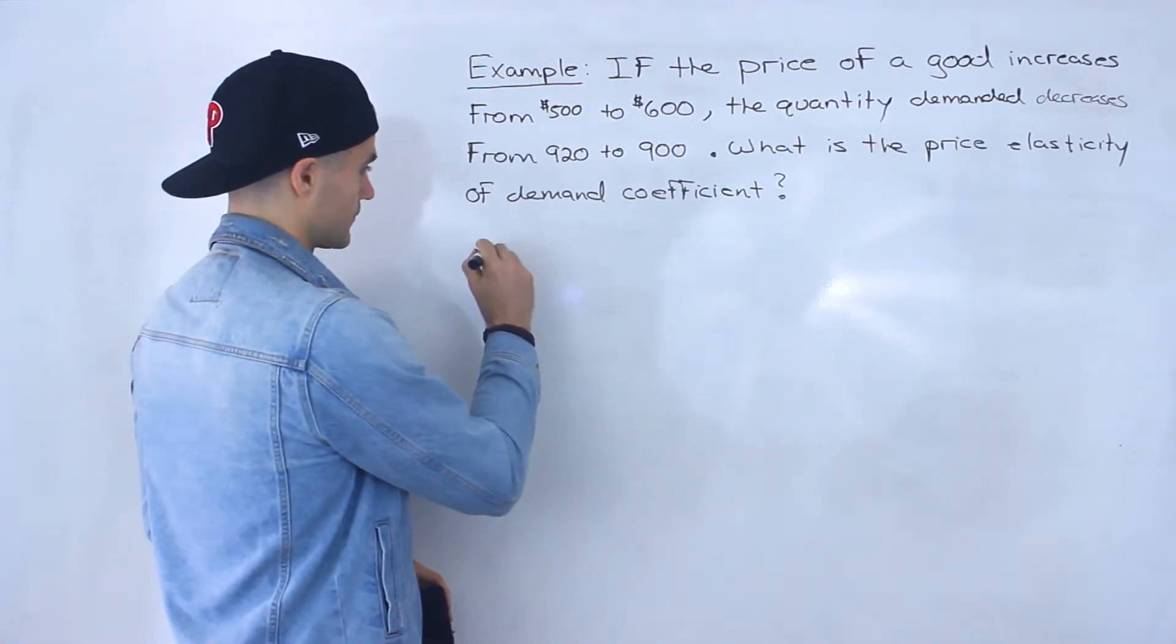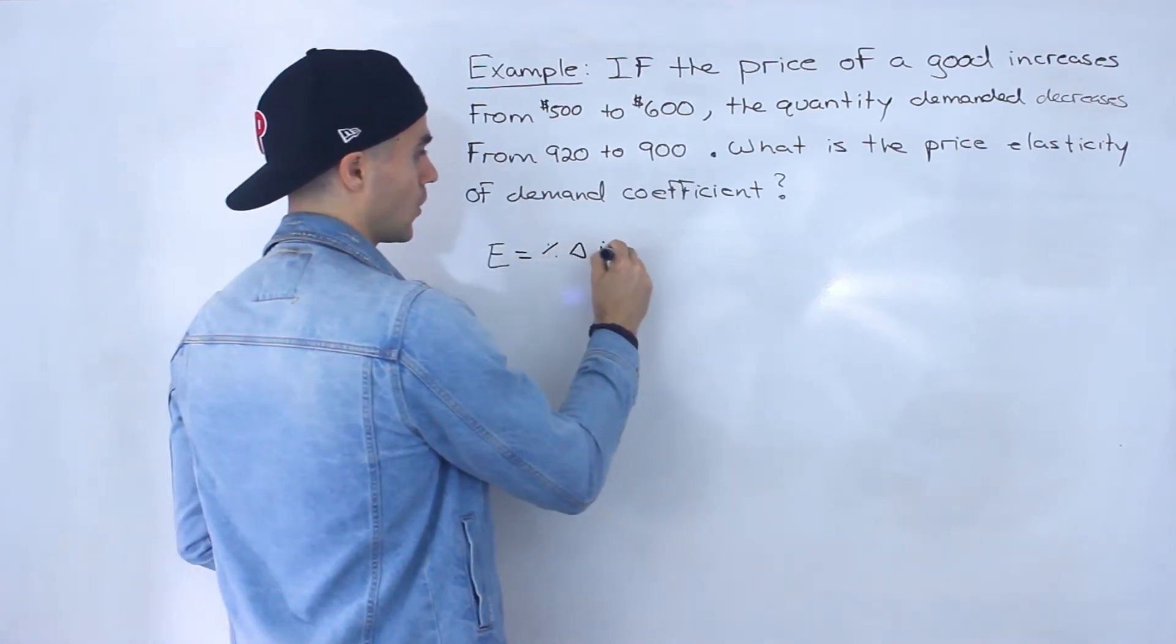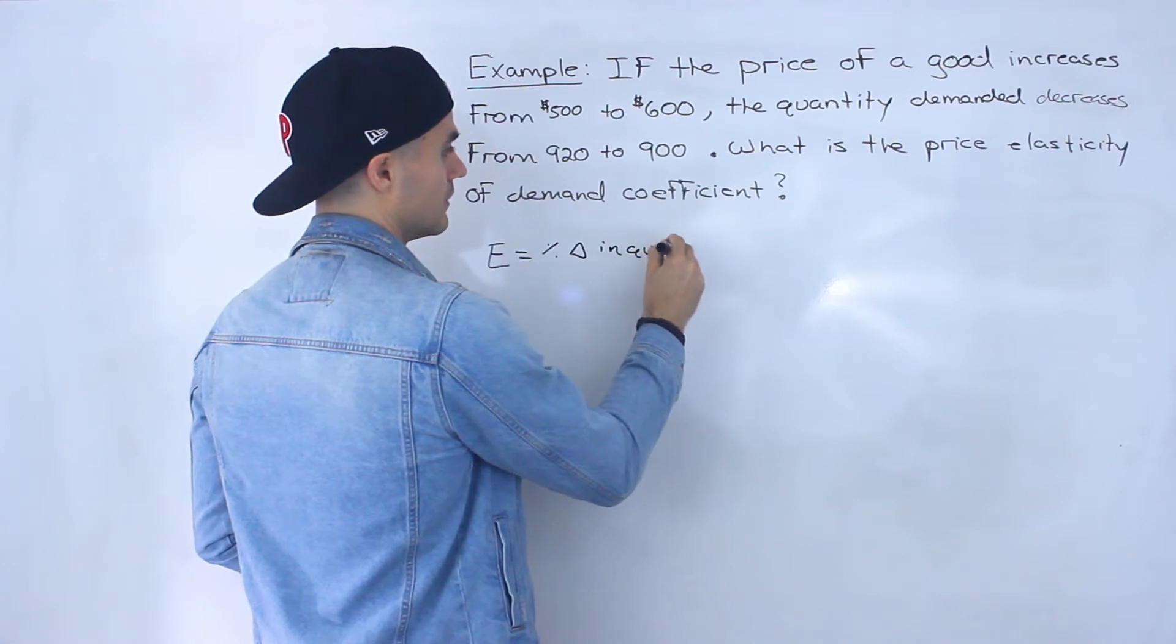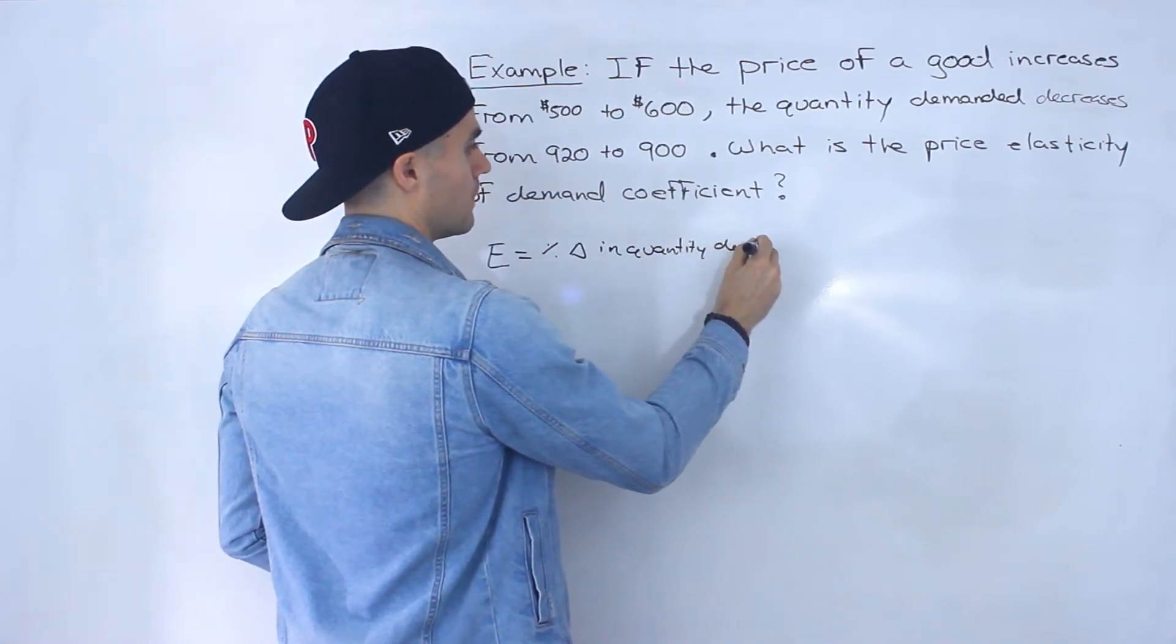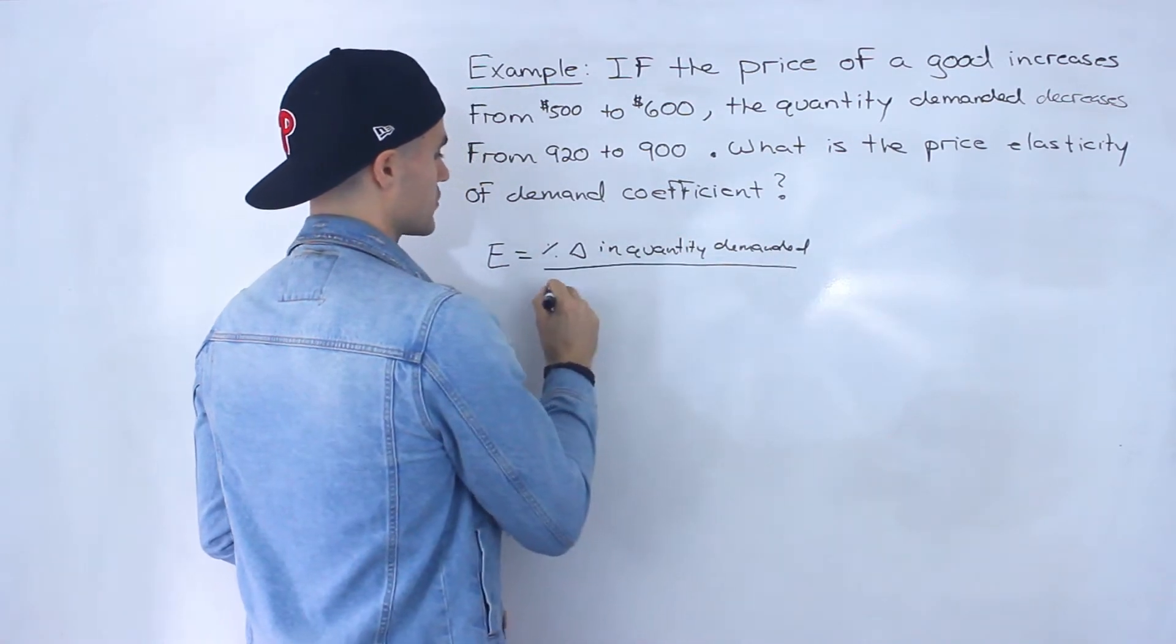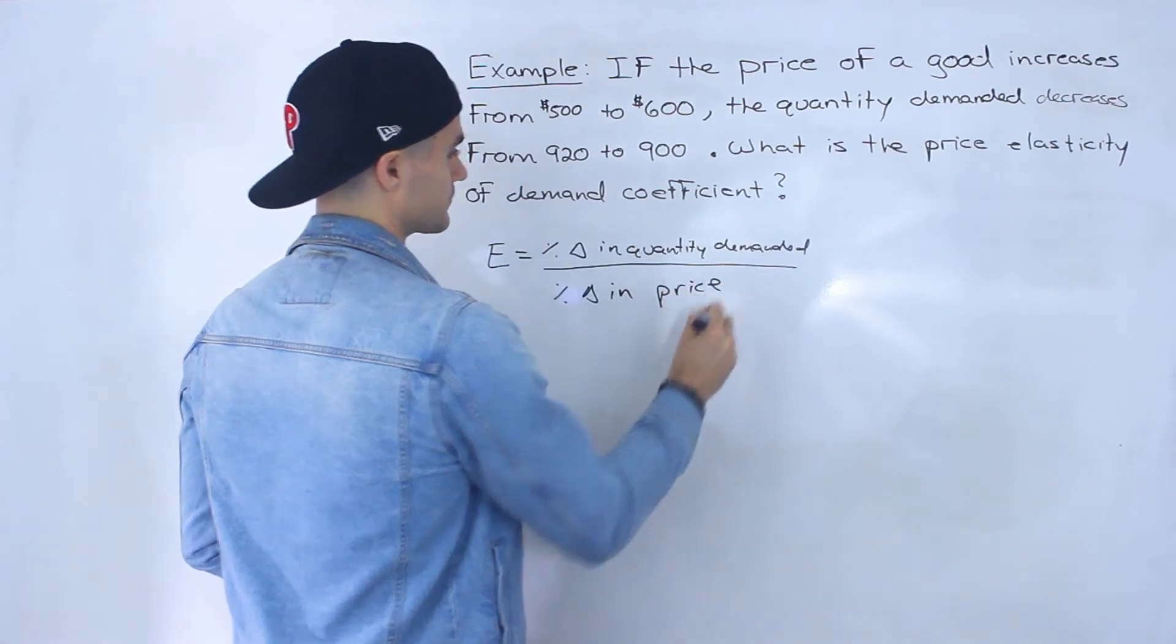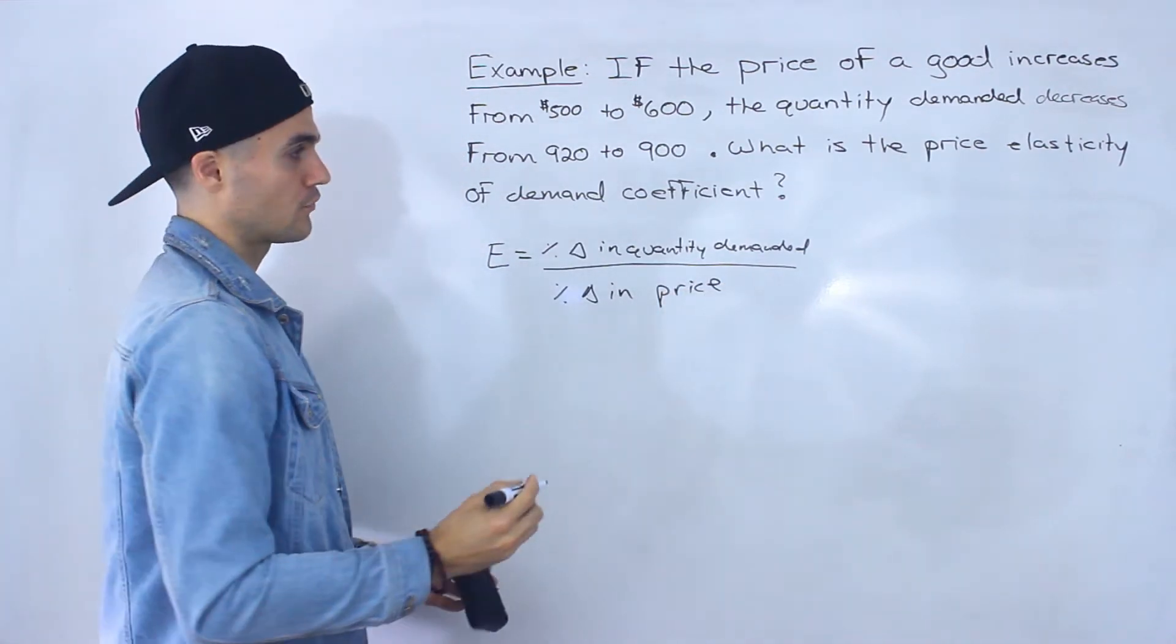So actually erase the formula here. So we got the percentage change in quantity demanded over the percentage change in price. That's the formula for the coefficient.